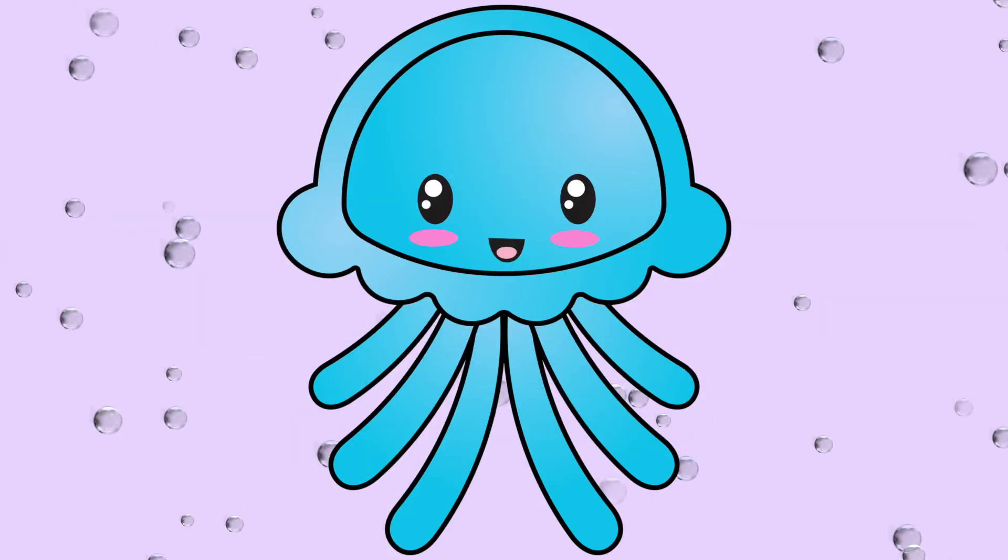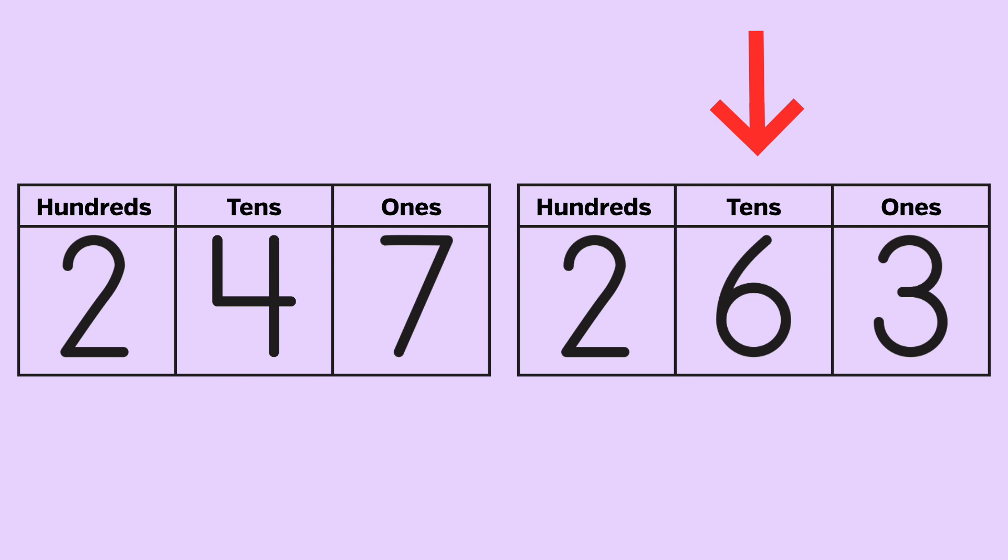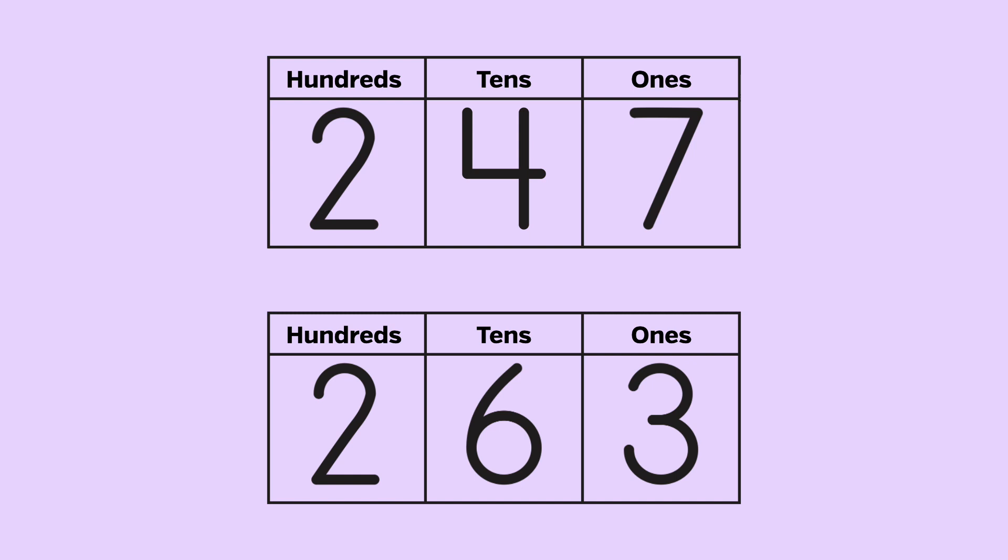Joey decided to try two larger numbers, 247 and 263. He put the numbers in place value charts and started on the left with the greatest place value, the hundreds. 247 has two hundreds. So does 263. Then he looked at the tens place. 247 has four tens, while 263 has six. 4 is less than six, so he can stop right there. 247 is less than 263.